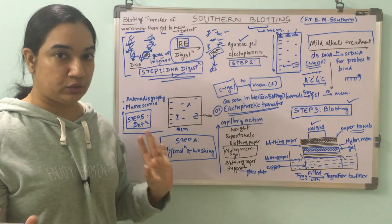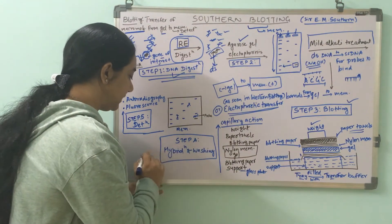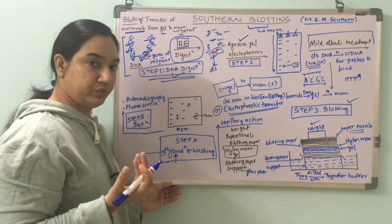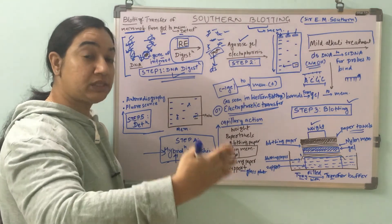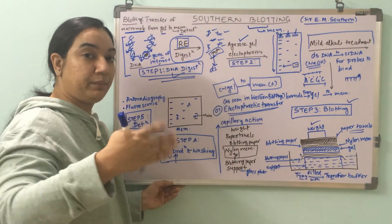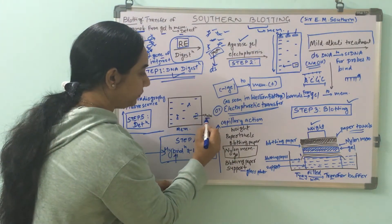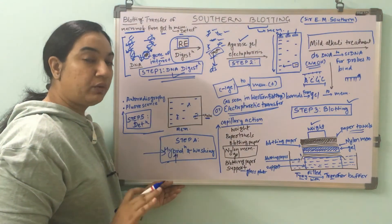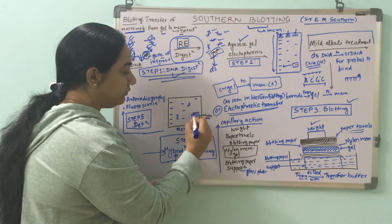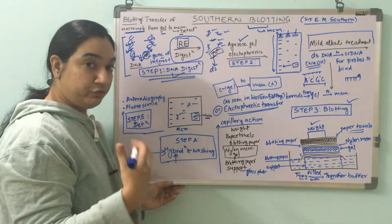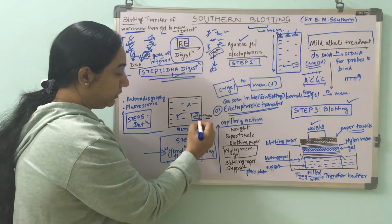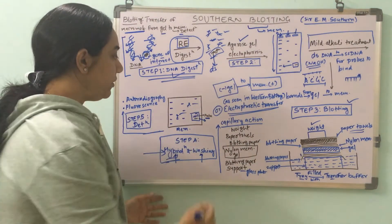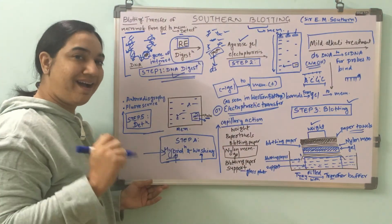The next step is Step 4 — hybridization and washing. Since we know the sequence of our gene of interest, we use a complementary single-stranded labeled probe. We soak the membrane with this probe, and the probe will locate the gene of interest and bind to it; the rest will not bind. To remove the extra unbound probe, you simply do washing. This binding of the single-stranded probe to the gene of interest is called hybridization.